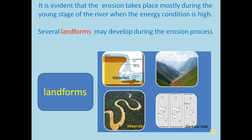It is evident that erosion takes place during the young stage of the river when energy conditions are high. During the young stage, several landforms may develop — for example, waterfall, valley, meander, oxbow lake. These are all called landforms, and they develop during the erosion process, that means, the young stage of the river.